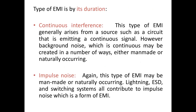A second classification is type of EMI based on its duration. There are two types: continuous interference and impulse noise. In continuous interference, a source such as a circuit emits continuous signals; background noise which is continuous may be created in a number of ways, either man-made or naturally occurring. Lightning, ESD, and switching systems all contribute to impulse noise, which is another form of EMI.